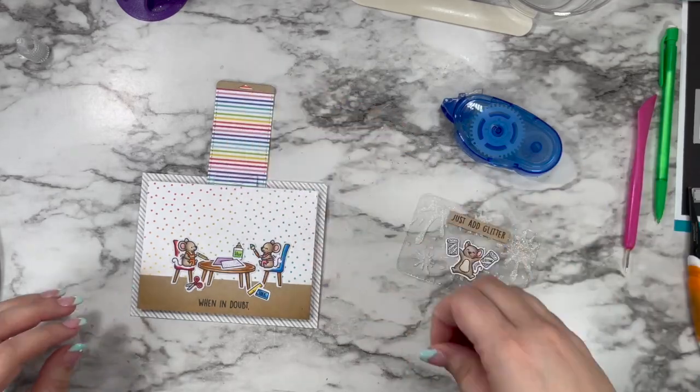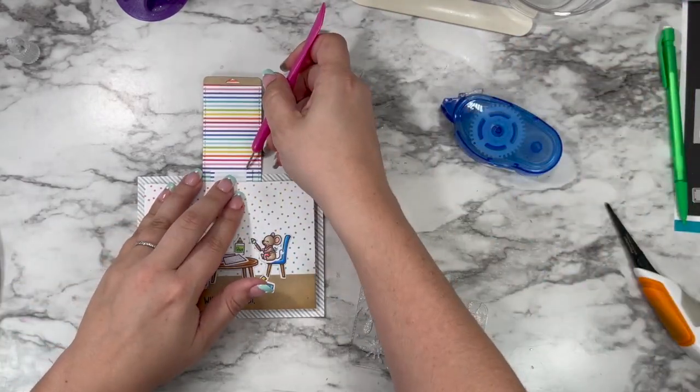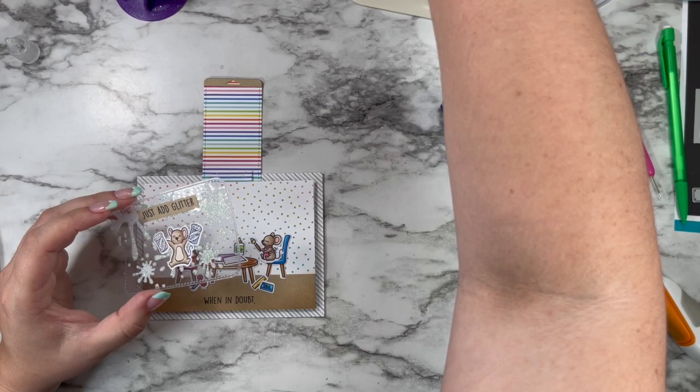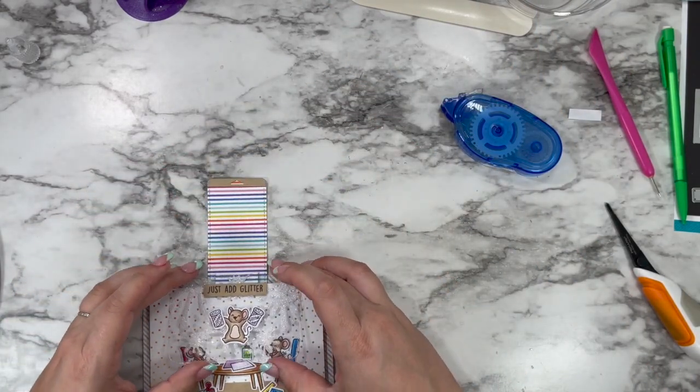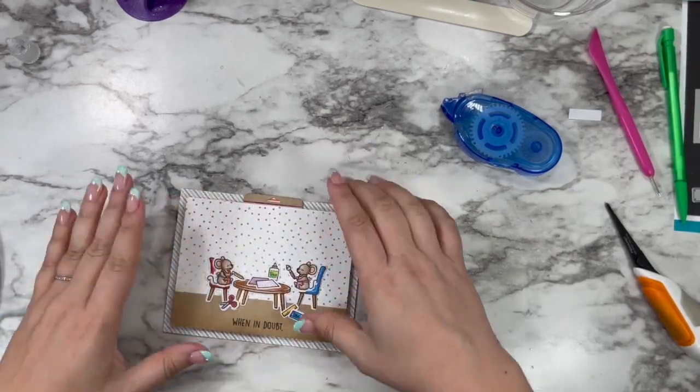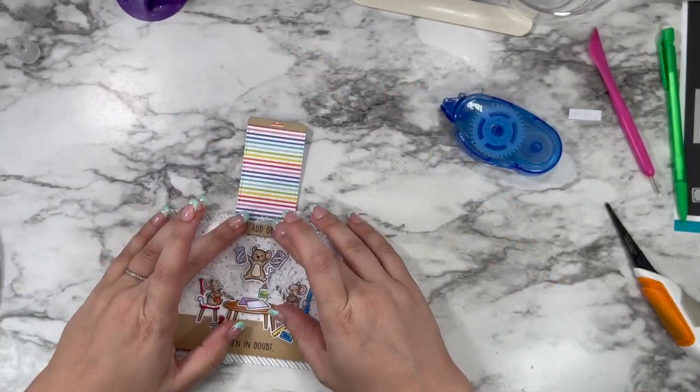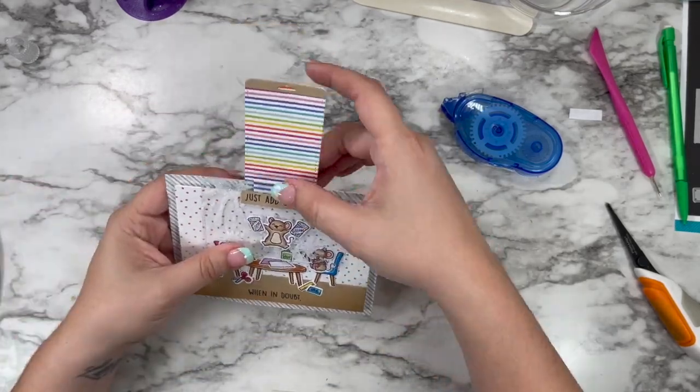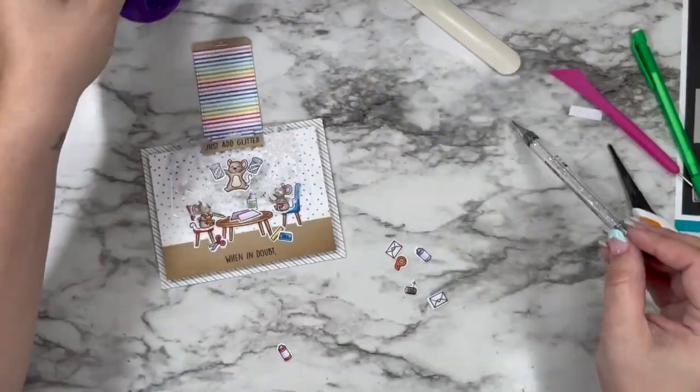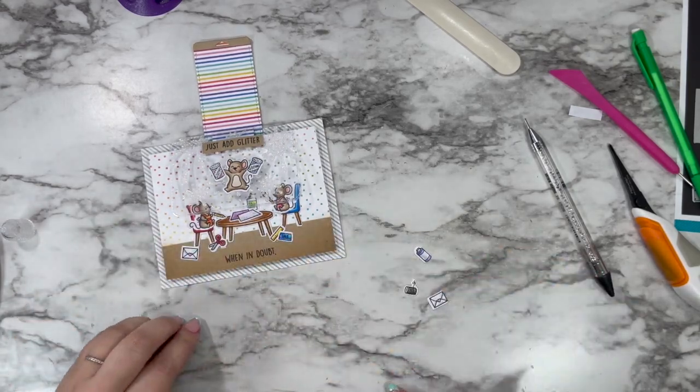I used that die to cut out a section of that rainbow stripe, added that into place, and then it was time to add my little gift card and my mouse. I just used a little bit of tape runner. I ended up having to go back afterwards and really adhere this down with some nice strong liquid glue and give it some time to dry. Keep that in mind - after you create your card, you definitely want to take your time and play around with using that mechanism and make sure that everything is pulling out correctly and is nice and strong.